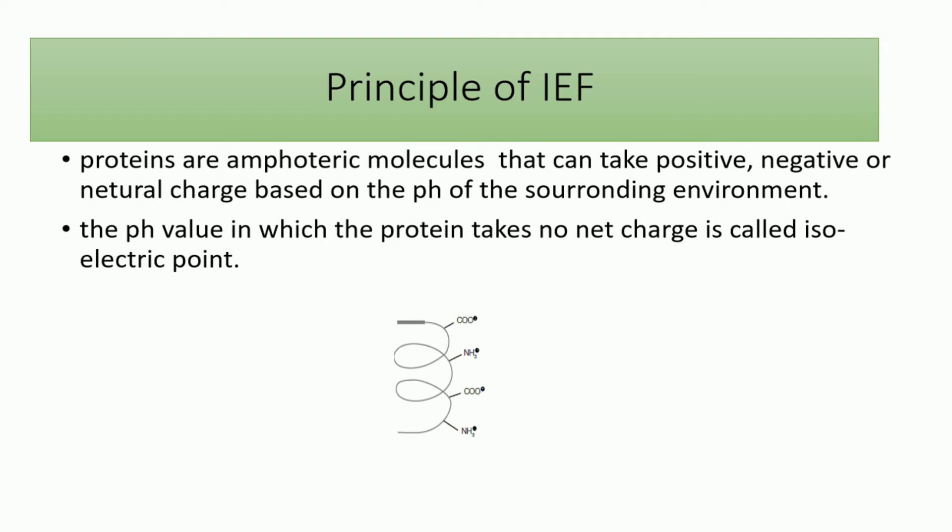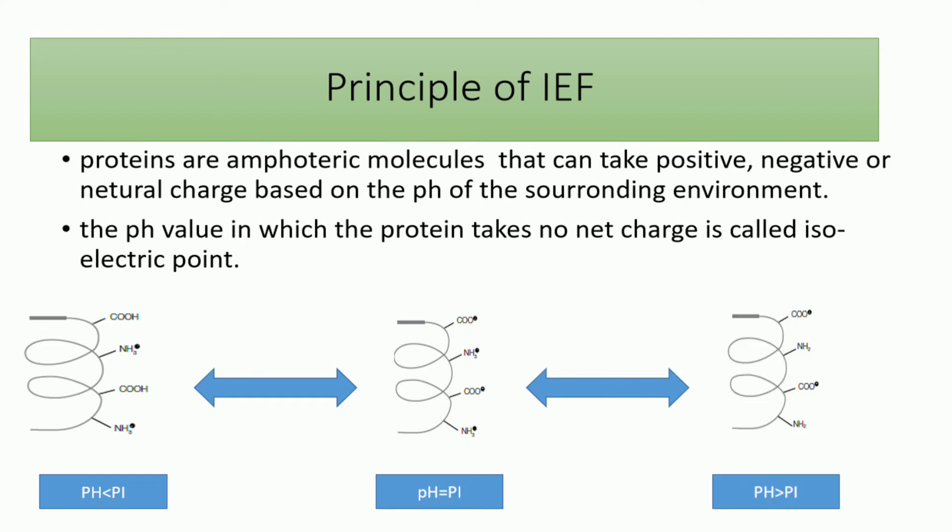In this case, the carboxylic groups will be negatively charged and the amino groups will be positively charged. This is called the isoelectric point. When the pH of the surrounding environment is lower than the isoelectric point for this protein, the protein takes the positive charge because the amino group will take protons from the surrounding environment. On the other hand, when the pH environment is more alkaline, the carboxylic group will be negatively charged and the protein will take the negative charge as a whole.